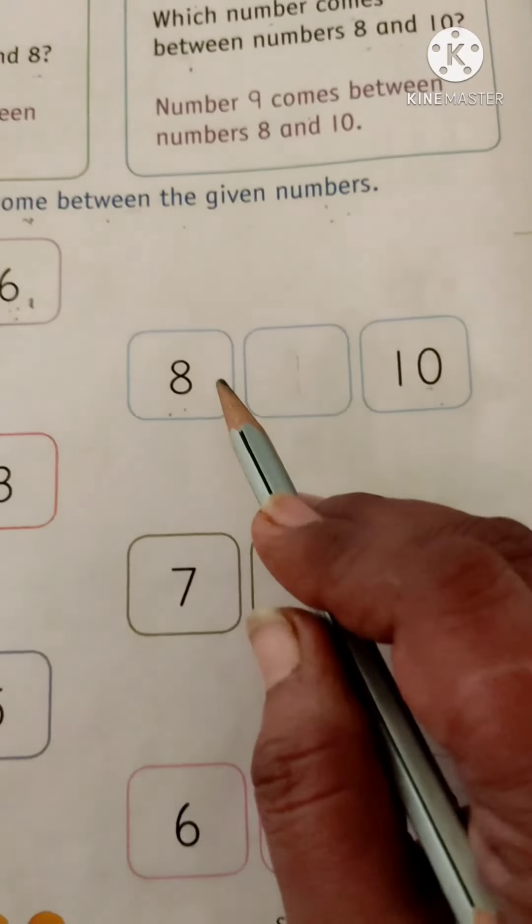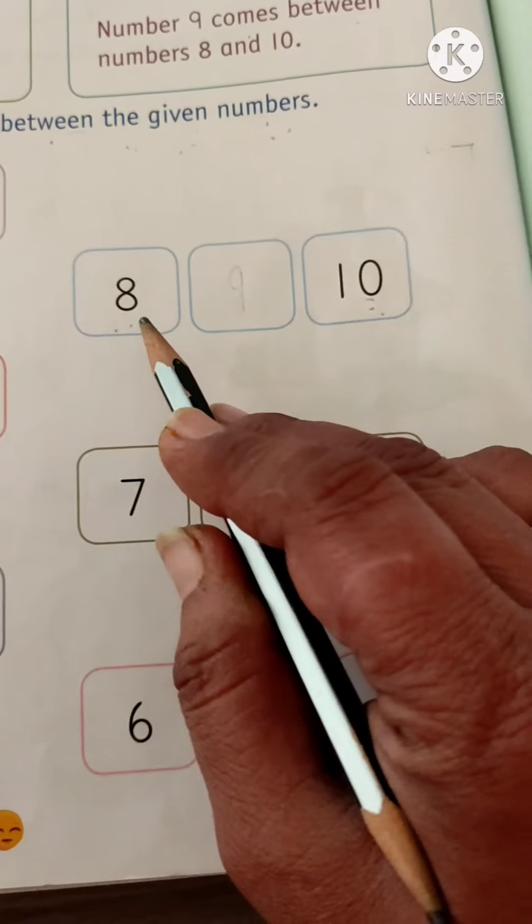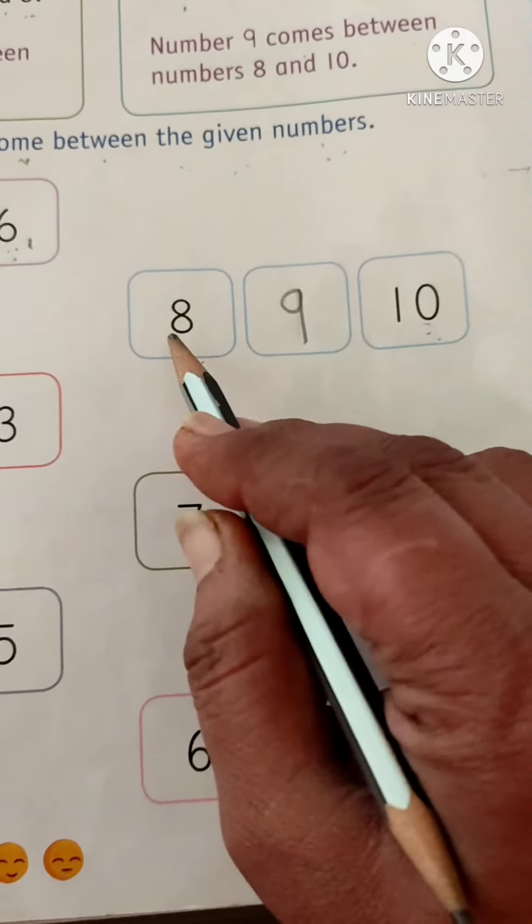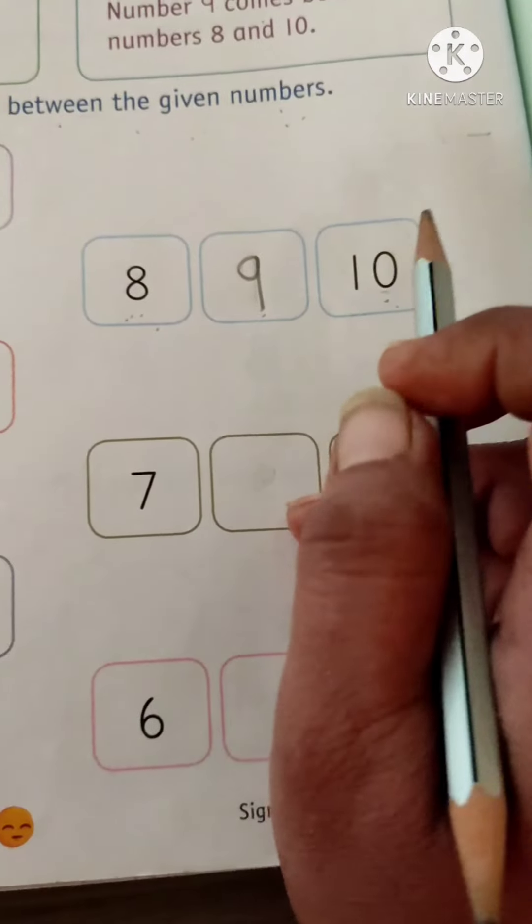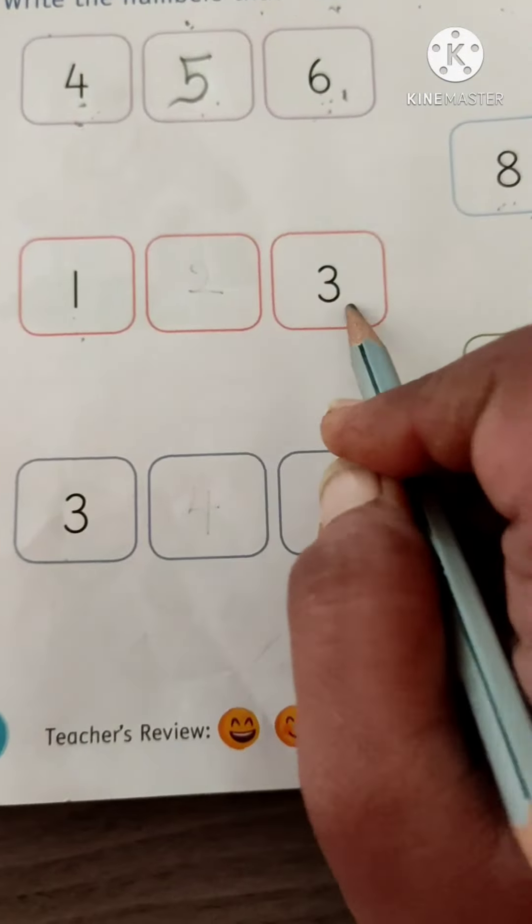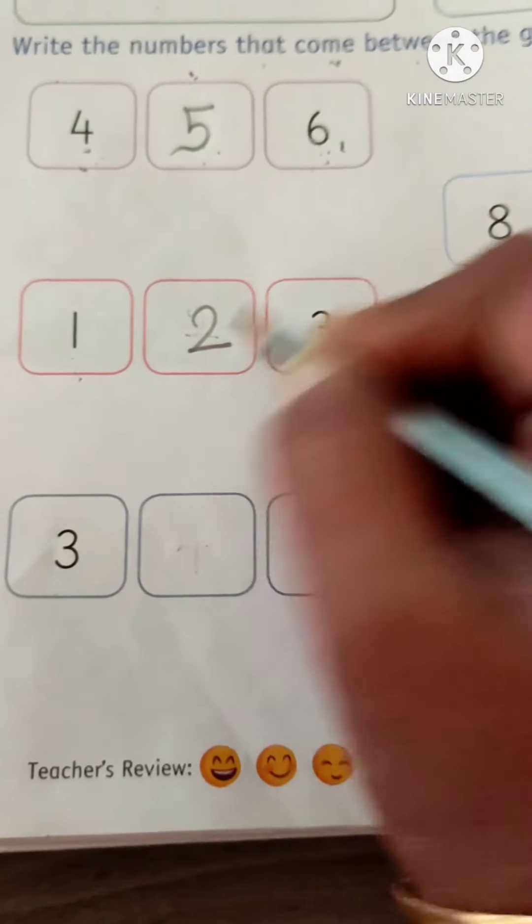Next. This is 8 and this is 10. Which number comes between 8 and 10? 9. 8, 9, 10. Next, 1 and 3. Which number comes between 1 and 3? 2. So, write 2.